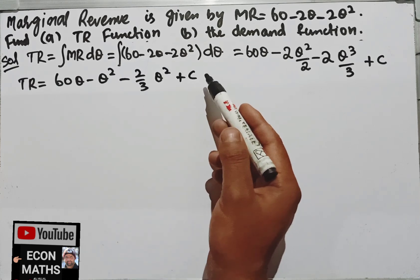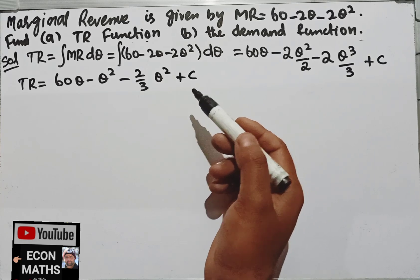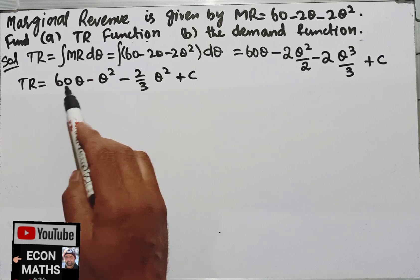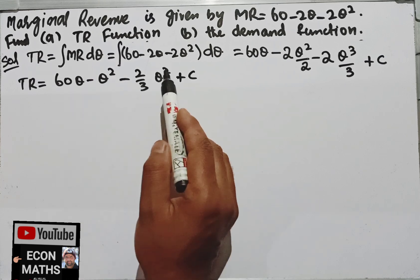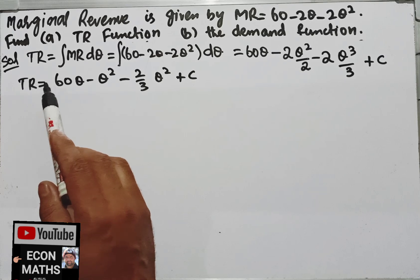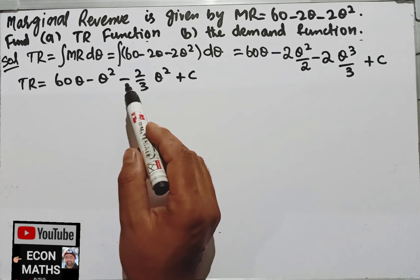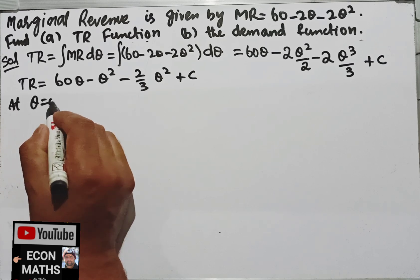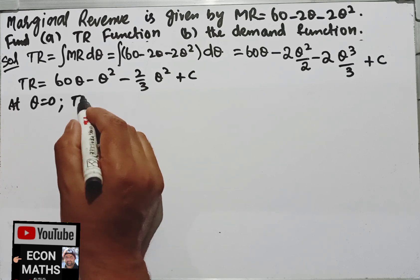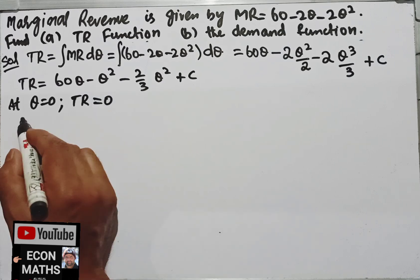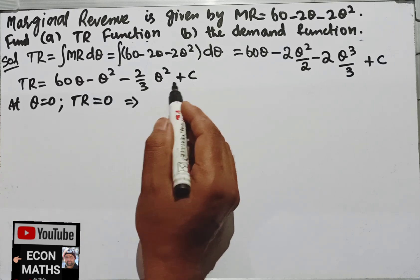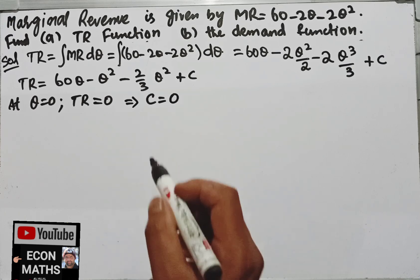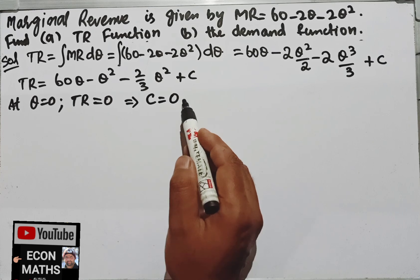Now, when quantity is 0, this term becomes 0 and so does this one. Revenue is also 0 at Q equals 0. Therefore, at Q equals 0, total revenue is also 0, which implies the value of C is equal to 0. So the constant of integration is equal to 0.